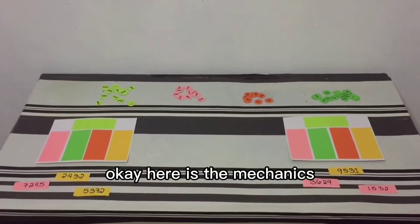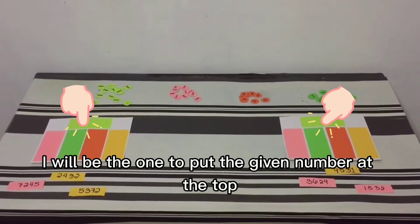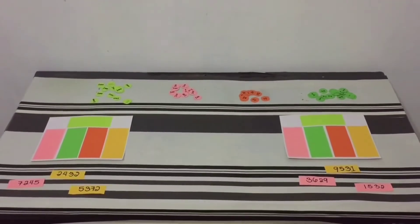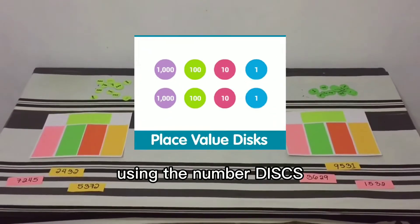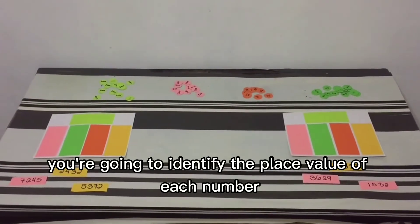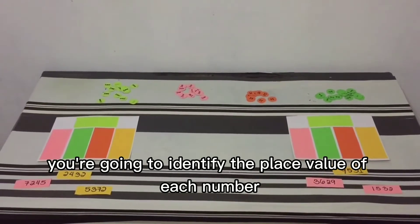Okay, here is the mechanics. I will be the one to put the given number at the top. Using the number disk, you're going to identify the place value of each number.